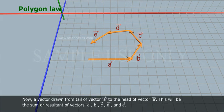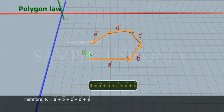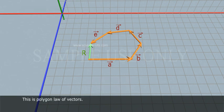Now, a vector drawn from tail of vector A to the head of vector E, this will be the sum or resultant of vectors A-bar, B-bar, C-bar, D-bar and E-bar. Therefore, R is equal to A-bar plus B-bar plus C-bar plus D-bar plus E-bar. This is Polygon Law of Vectors.